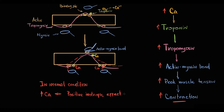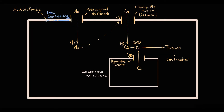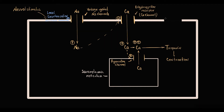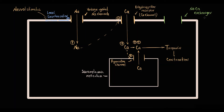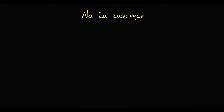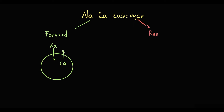After contraction, relaxation has to occur. To relax, calcium level in the cytosol has to decrease. Decrease in calcium occurs via the sodium-calcium exchanger and sarcoprotein. The sodium-calcium exchanger is located on the cell membrane and can work in two modes. In forward mode, it transports sodium into the cell and calcium out of the cell. In reverse mode, it transports sodium out of the cell and calcium into the cell.